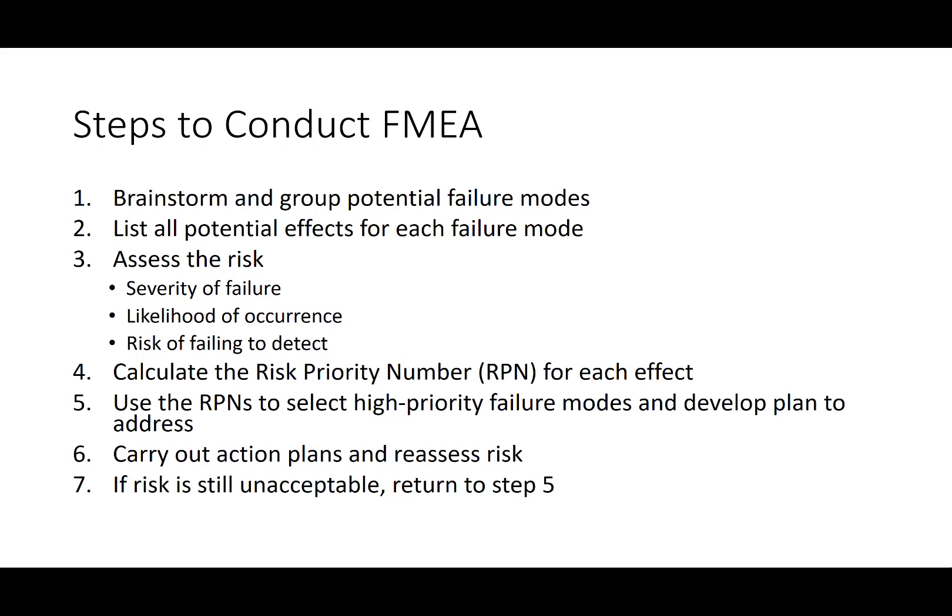In creating an FMEA, there are several steps to follow. The first is to brainstorm and group all potential failure modes — any way that the product, process, or system could fail. This can be a very exhausting effort, but it's very valuable to get these all done up front before you evaluate them individually. You then list all the potential effects for each failure mode — if it were to fail in this particular way, what would happen and what would be the result?